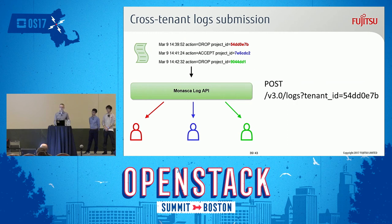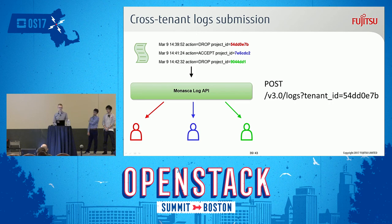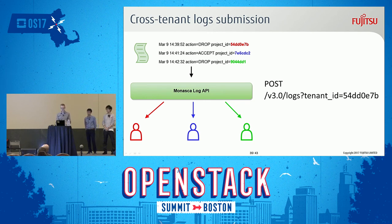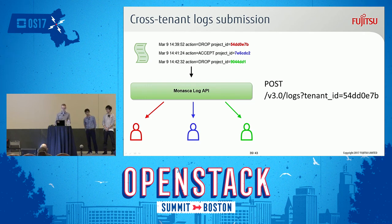One more feature I'd like to show in the context of our use case is cross-tenant log submission. The agent collects logs from Neutron, authenticates with Keystone, and also has the logic to detect that each individual log entry actually belongs to a different project. So we add the query parameter tenant_id and send the logs on behalf of that project. They are then separated so that every user from every project can see their own logs.